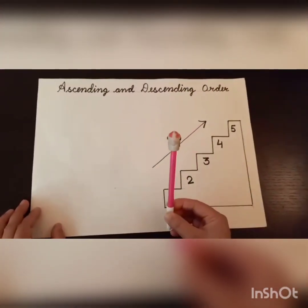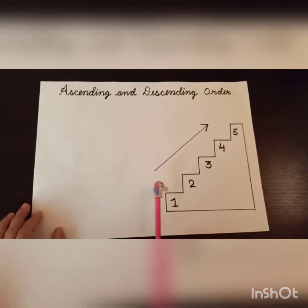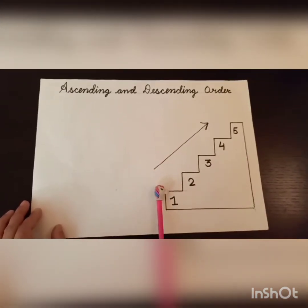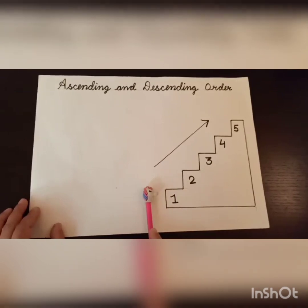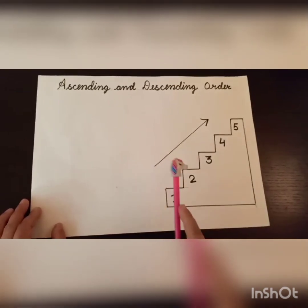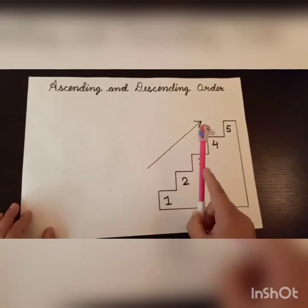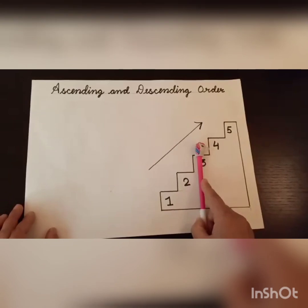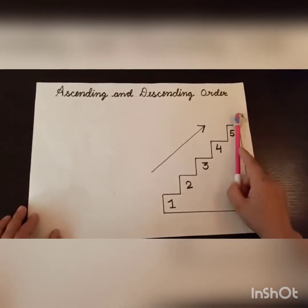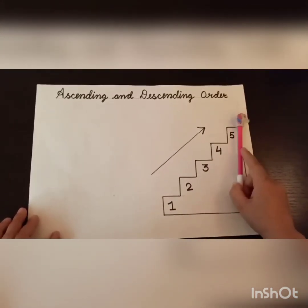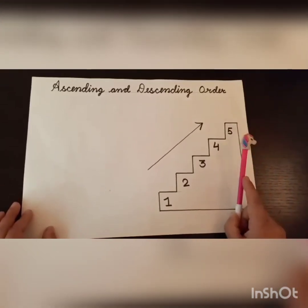This is my unicorn Tutu. Tutu wants to climb up the stairs. What will Tutu do? Tutu will go to stair number 1, then stair number 2, then stair number 3, then stair number 4, and in the end stair number 5. What is Tutu doing here?